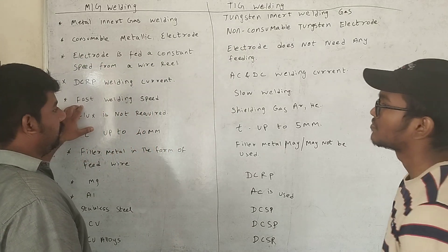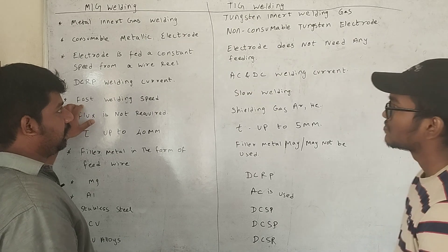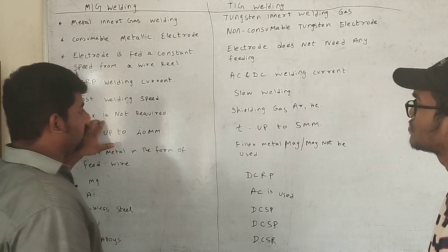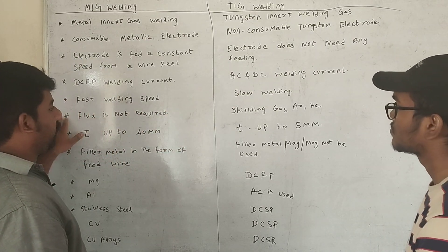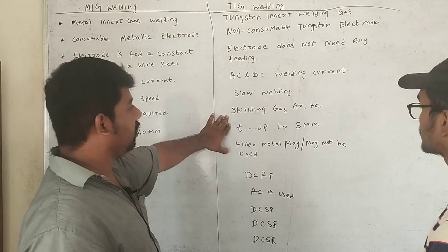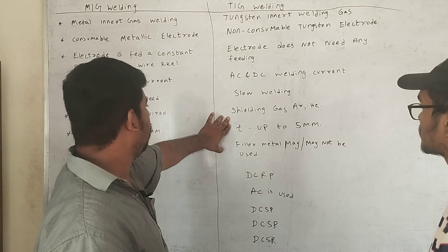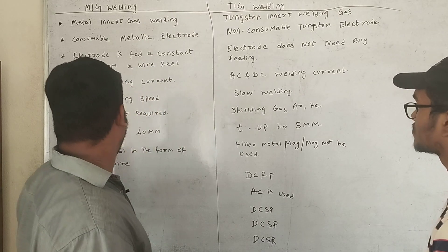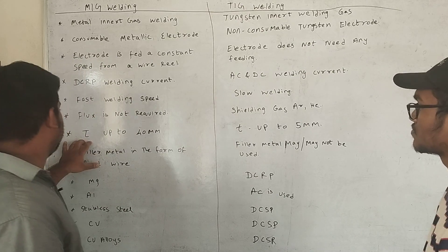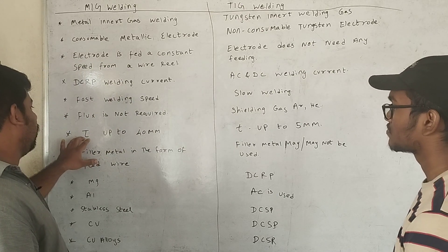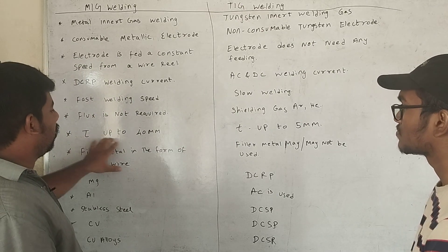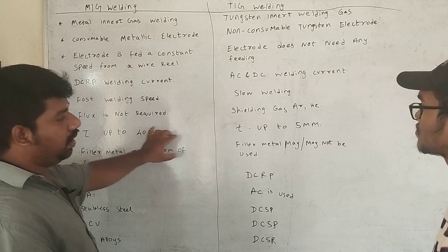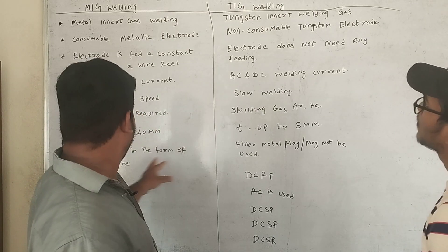MIG welding speed is faster, while TIG is slower. The shielding gas used is helium and argon. MIG welding handles thickness up to 40mm, and TIG handles up to 5mm.